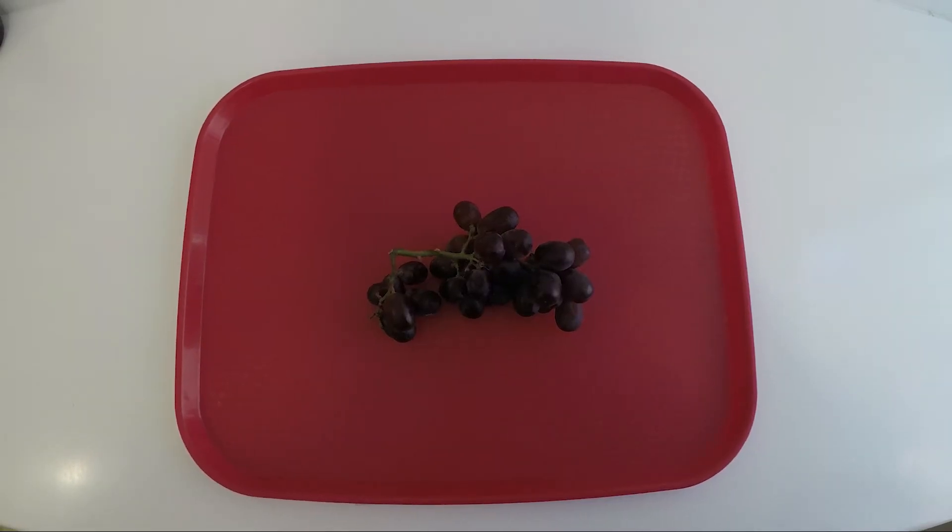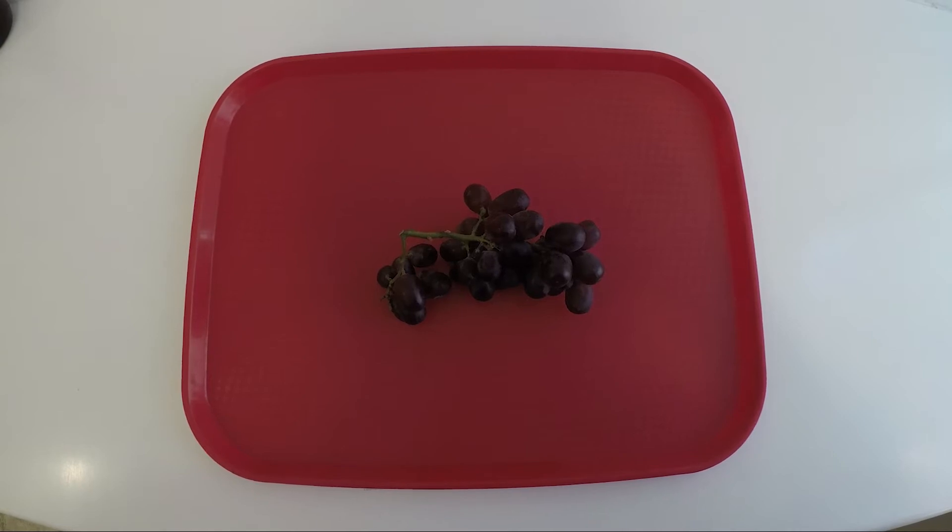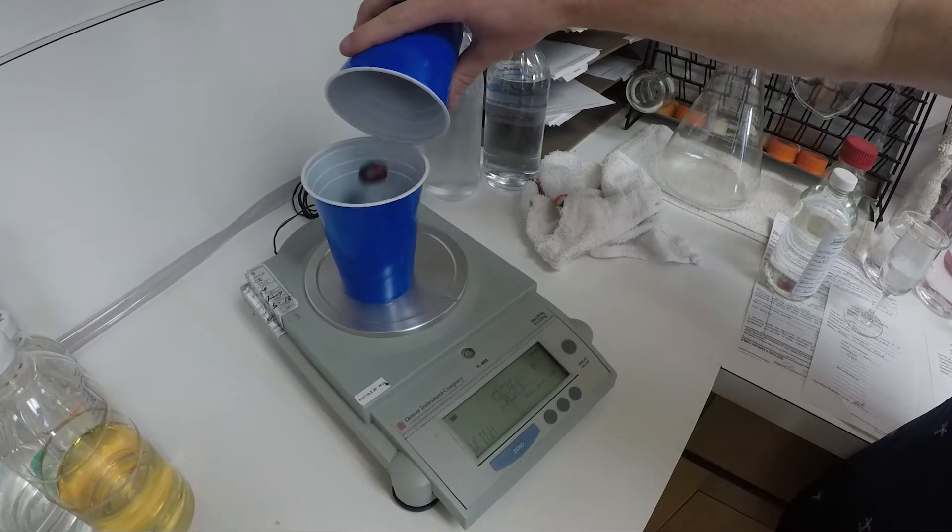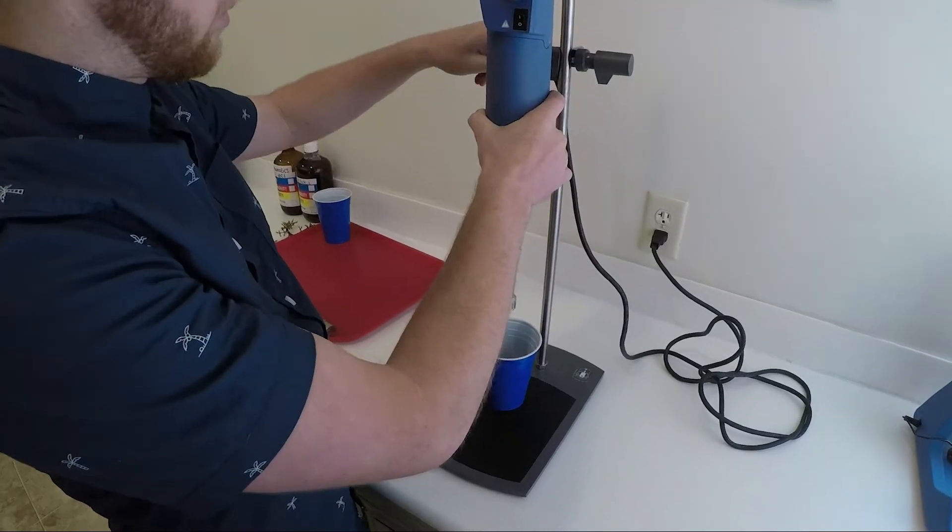Now that we have a representative sample of the entire block, we'll separate the berries from the rachis. We'll take the weight of our entire sample to find the average berry weight. Let's homogenize.